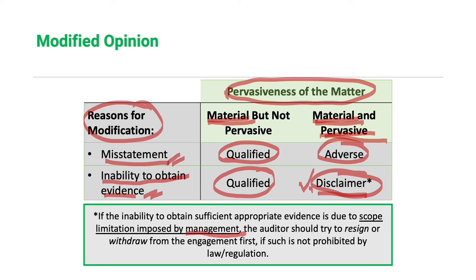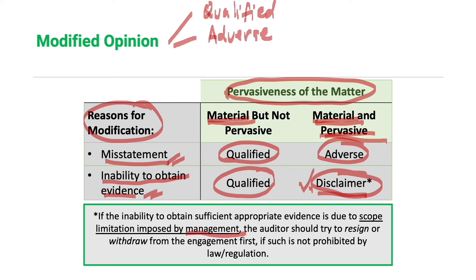To summarize: the auditor issues a qualified opinion under two circumstances — either there is a misstatement or an inability to obtain evidence, but the effect or possible effect is material but not pervasive. The auditor issues an adverse opinion when there is a misstatement and the effect is both material and pervasive. The auditor disclaims an opinion if unable to obtain sufficient and appropriate evidence and the possible effect is both material and pervasive.